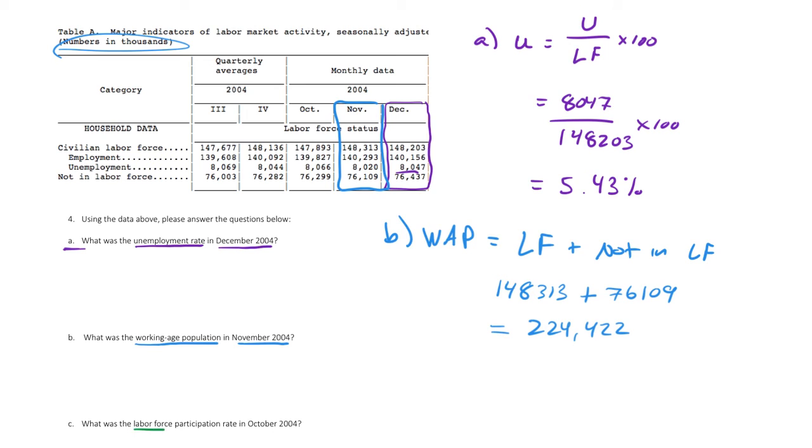Now, let's finish up with part C, labor force participation rate in October of 2004. We'll do that one in green. The equation for the labor force participation rate is the labor force over the working age population times 100. Again, there will be a video linked in the description of this video that will give you extra practice with these equations.